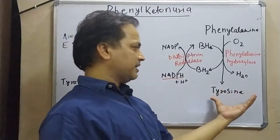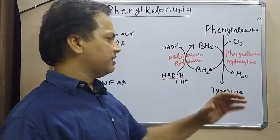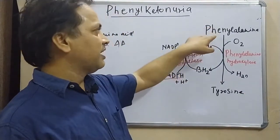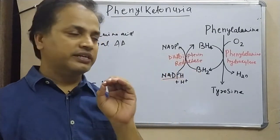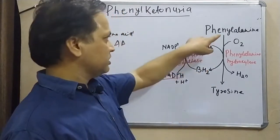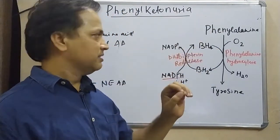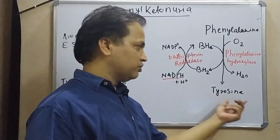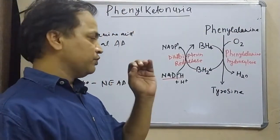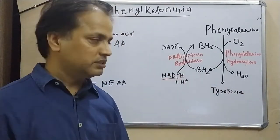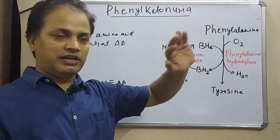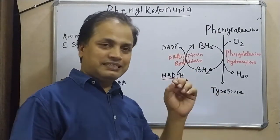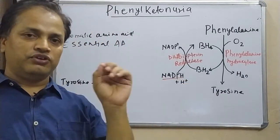If we get tyrosine directly in our diet, then our dependency on phenylalanine is reduced — we do not at all require phenylalanine in that case. This is called the sparing action of tyrosine over phenylalanine: if we have sufficient tyrosine from dietary sources, we do not require phenylalanine even though it is an essential amino acid.